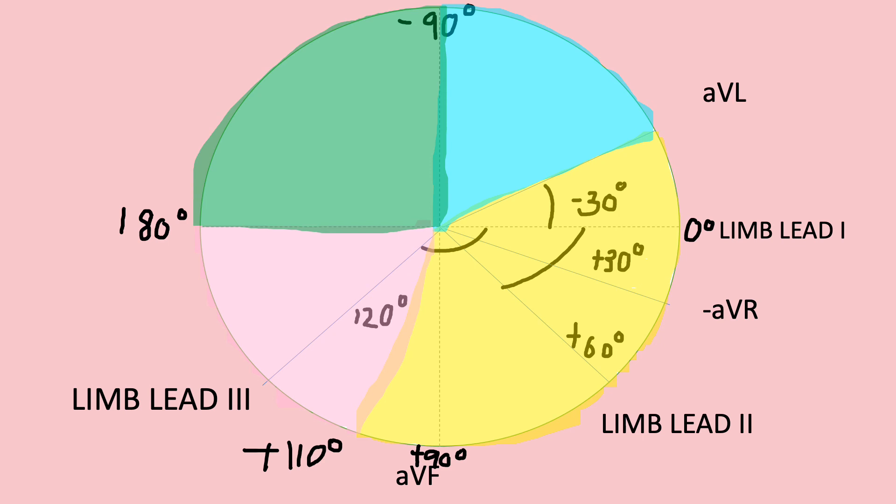For left axis deviation, you will notice that the QRS complex is higher around the AVL limit or Lead 1, should be around AVL limits. For right axis deviation, you will have a larger deflection complex at Lead 3.